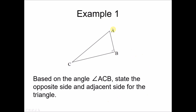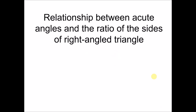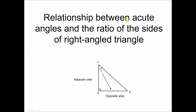Looking at Example 1: based on angle ACB as the reference angle, state the opposite side and adjacent side. The reference angle is already marked. The opposite side is AB, and CB is the adjacent side. AC is the hypotenuse because it is opposite to the right angle.